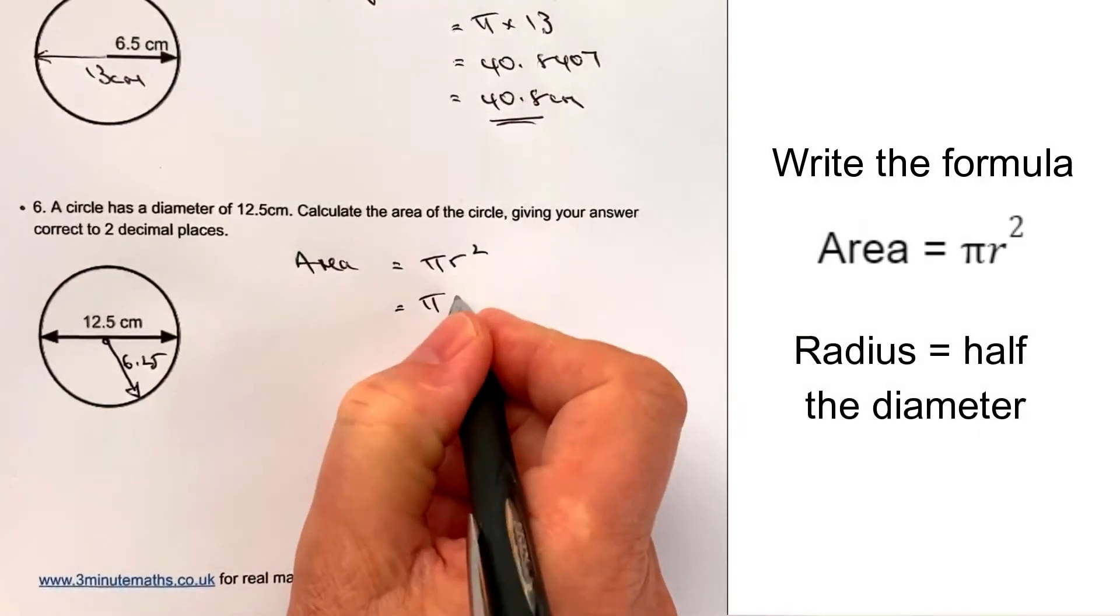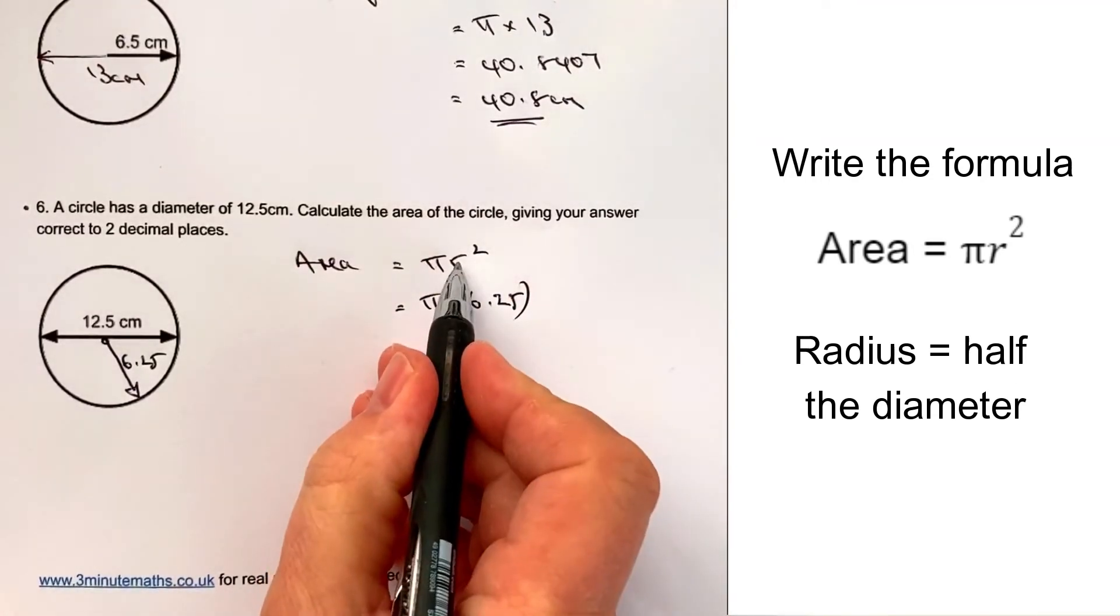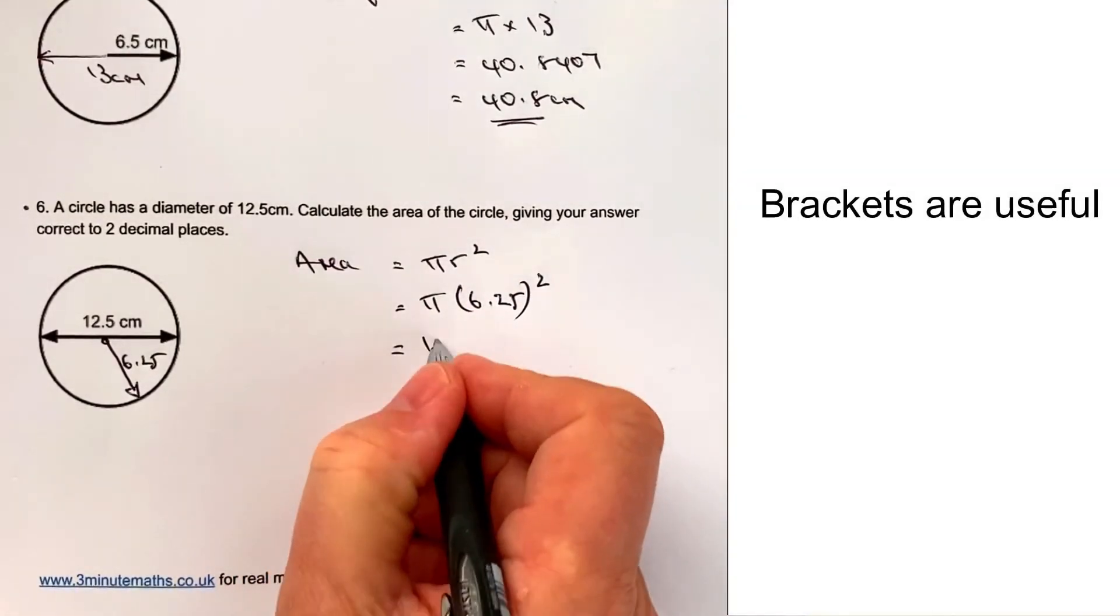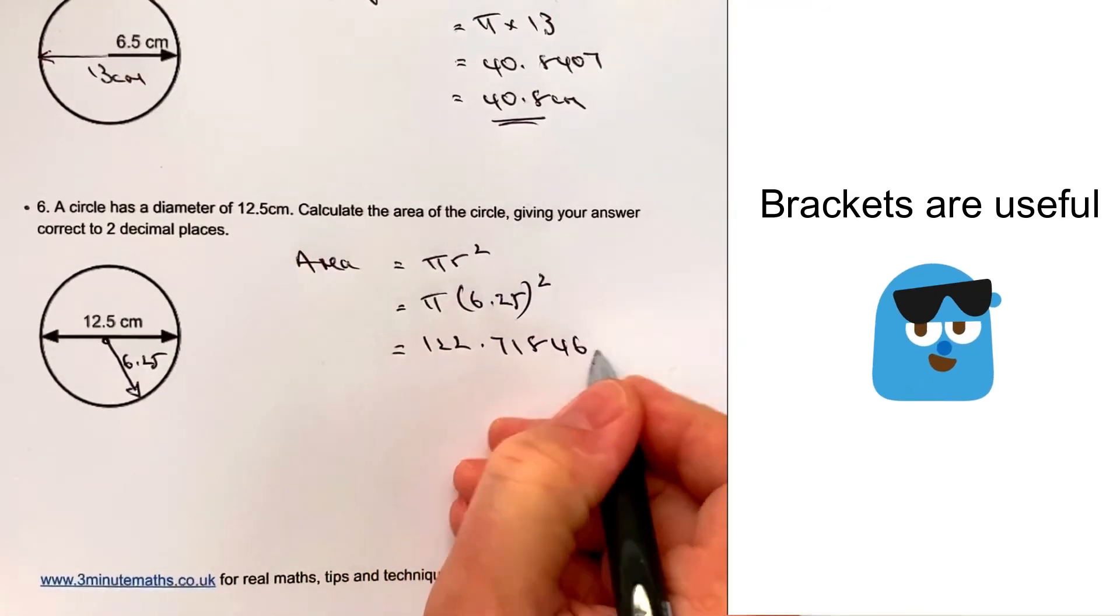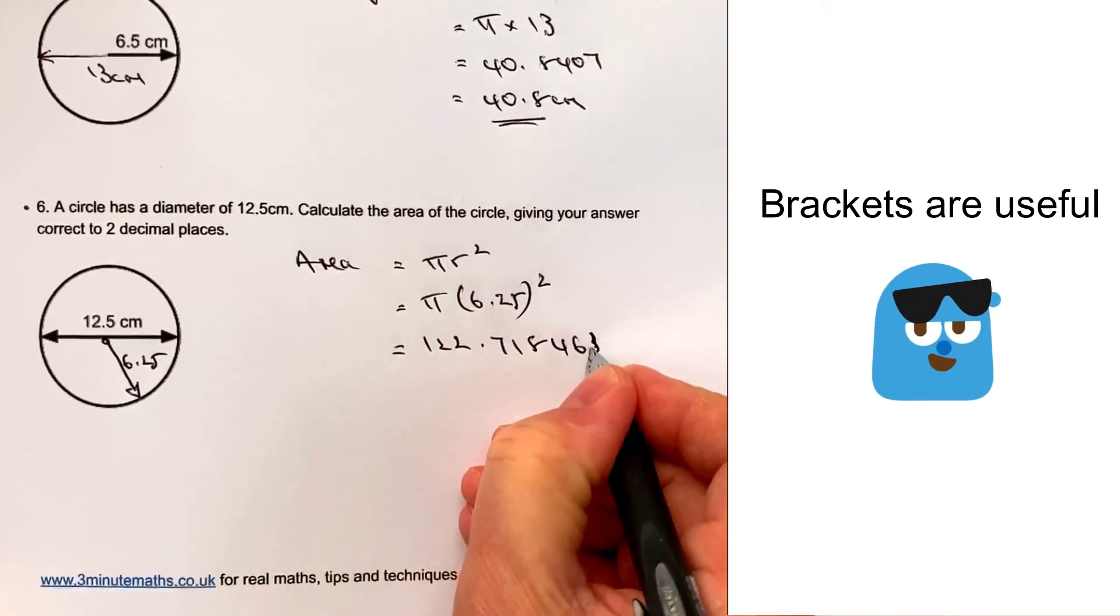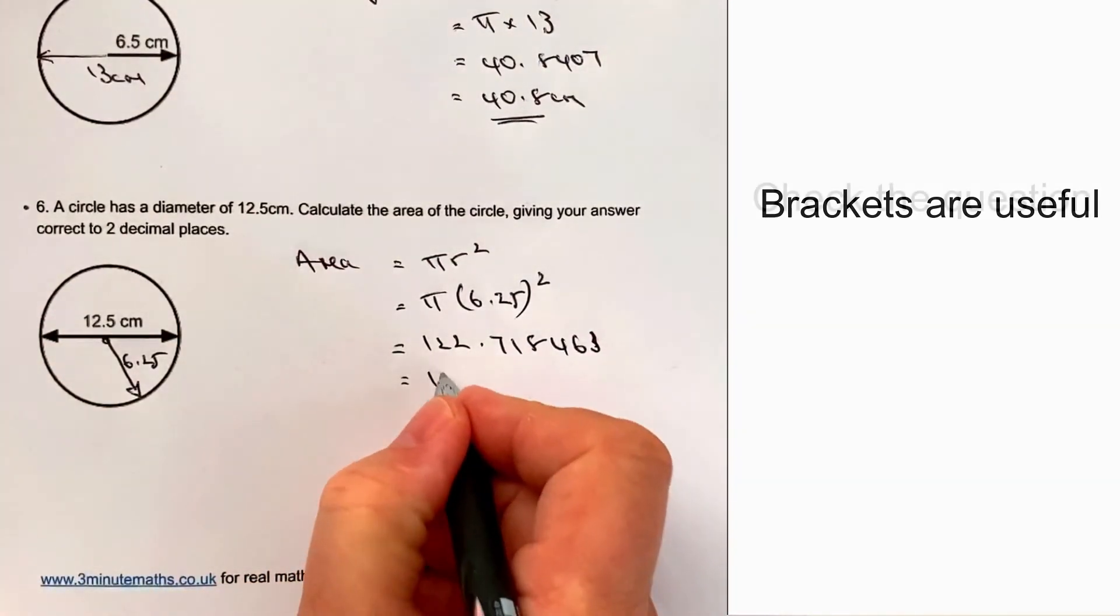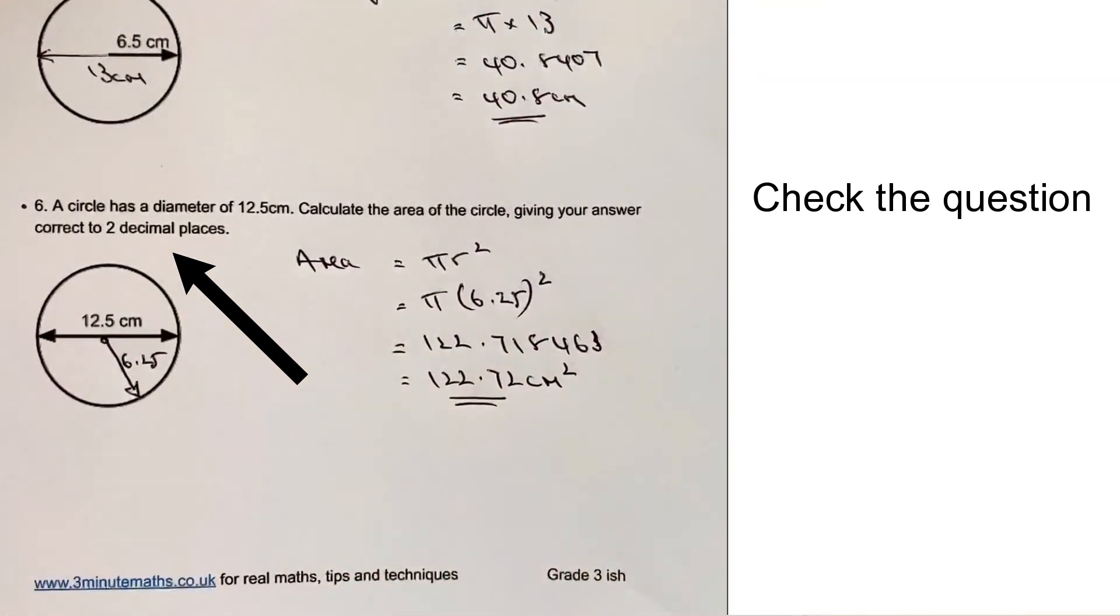So that's going to be equal to pi. And I'm going to put 6.25 in brackets because I'm basically substituting the r. And then I'm going to square it. And if I pop that into my calculator, I'm going to get 122.718463. And I think it probably goes on a little bit longer. But to two decimal places, that's going to give me 122.72. And the units are centimetres squared.